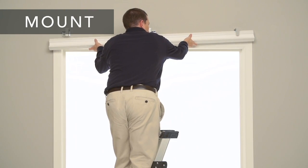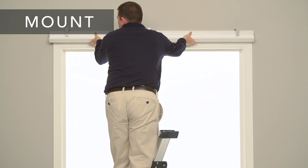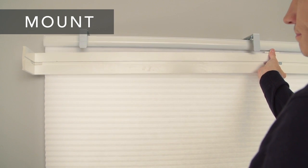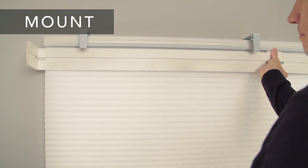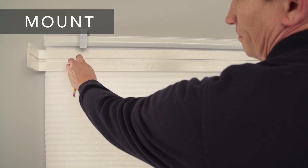Now install your blind or shade. Next, center the valance over your blind or shade and mark the bracket or clip locations on the back of the valance.